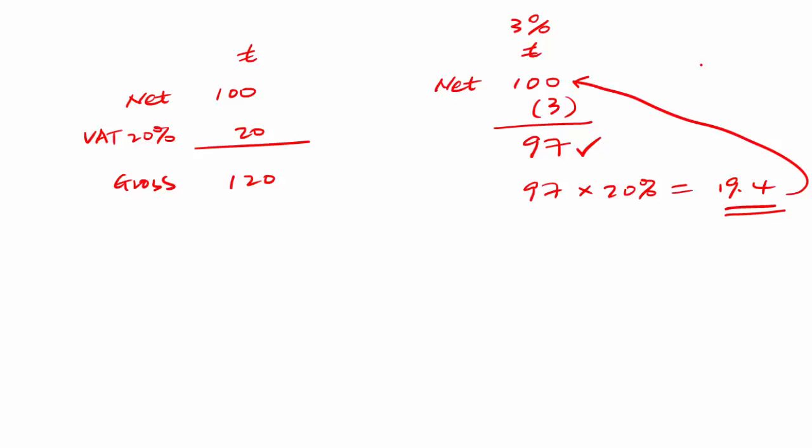We don't need a calculator for this. It's going to be £119.40. So now we can just see the difference of these two invoices. Initially we have the net, VAT, and gross. Now we have the same net, the new VAT, and the new gross.